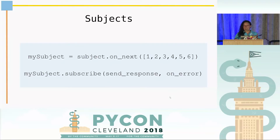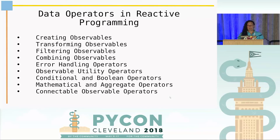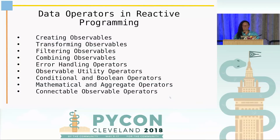We can combine a new observable to the subject — we'll see that combination later. This is the essence of reactive programming: the data operators. These are some categories of data operators: creating observables, transforming, filtering, combining, error handling, observable utilities, conditional and Boolean operators, mathematical and aggregate, and connectable. We're going to see some examples.